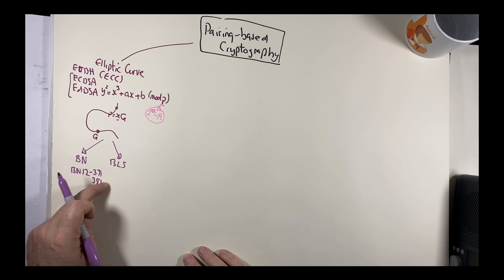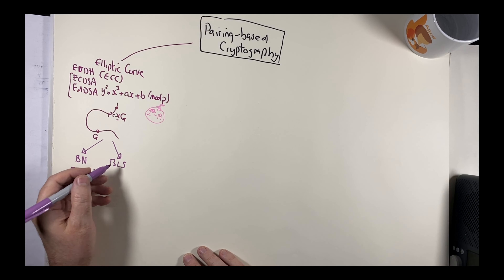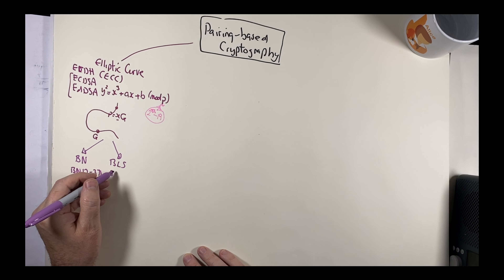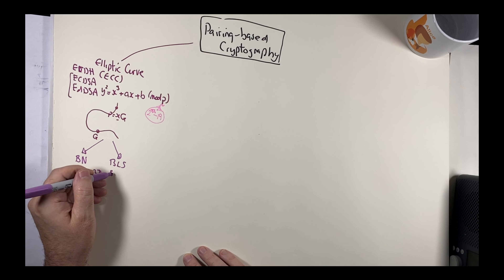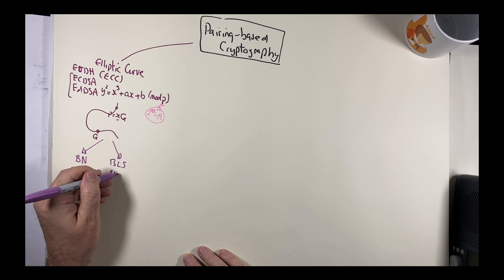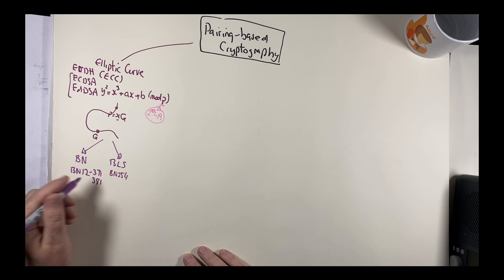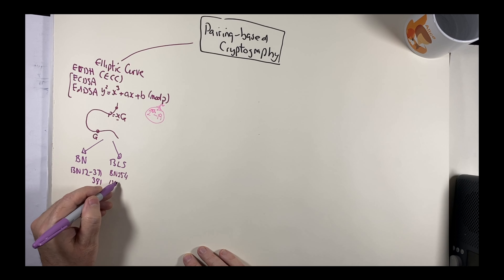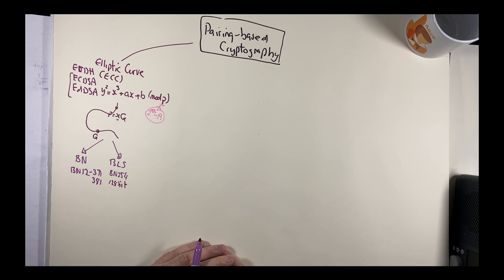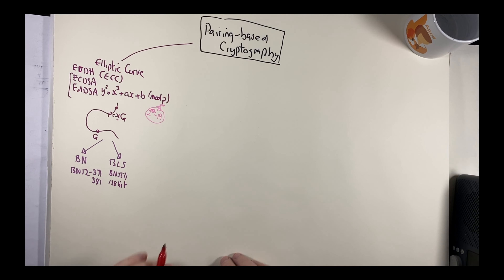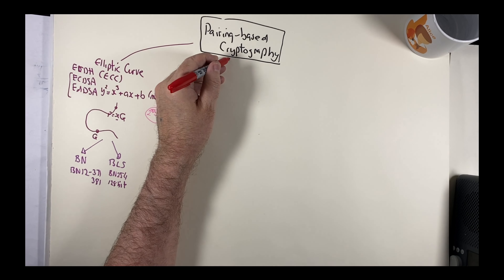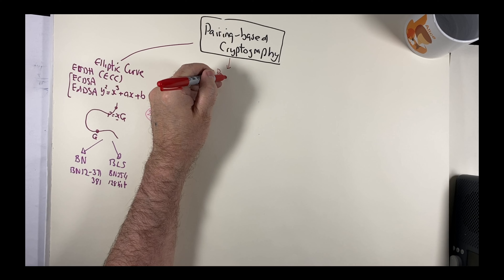A commonly used curve in Ethereum and other applications is the BN254 curve — a 254-bit prime number curve. These curves give us an equivalent of 128-bit security.